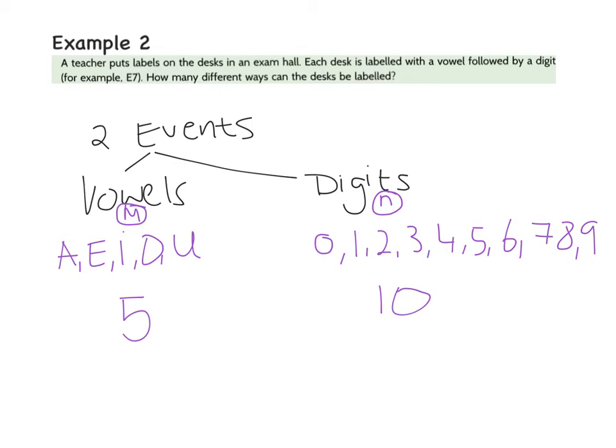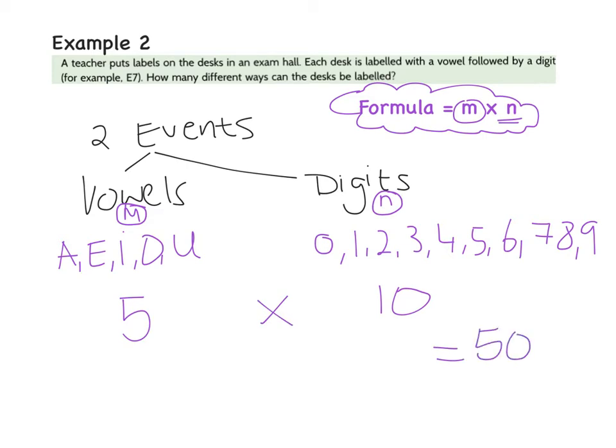If I think back to my formula, it is m multiplied by n. And my m in this case is 5, and 5 multiplied by 10 will give me 50 different ways I can rearrange those, or 50 different ways that teacher can label those desks.